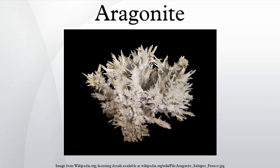An aragonite cave, the Ochtinská aragonite cave, is situated in Slovakia. In the USA, aragonite in the form of stalactites and cave flowers is known from Carlsbad Caverns and other caves. Massive deposits of oolitic aragonite sand are found on the seabed in the Bahamas.